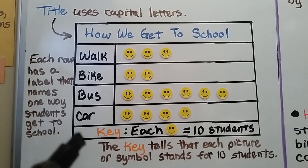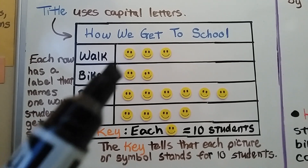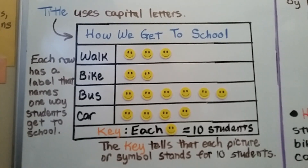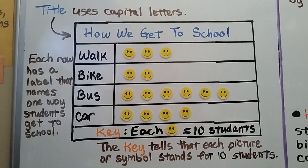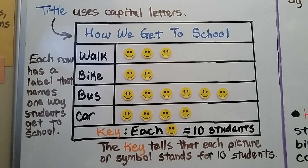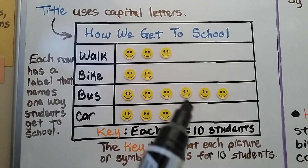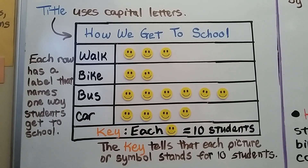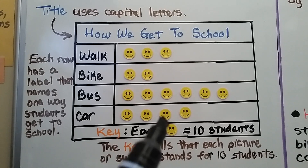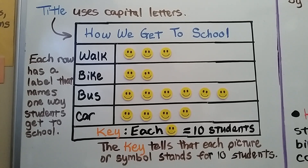We can skip count by tens and see that 30 students walk, 20 students bike, 60 students ride the bus, and 40 students get to school by car.